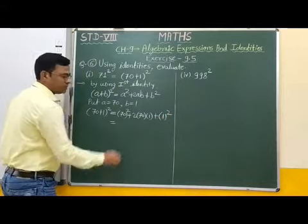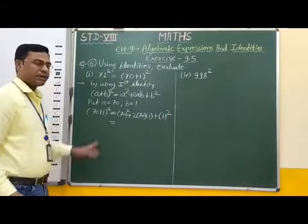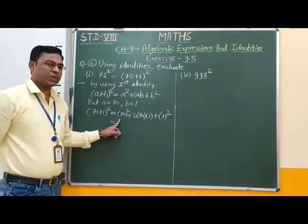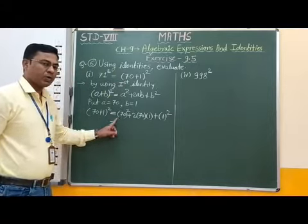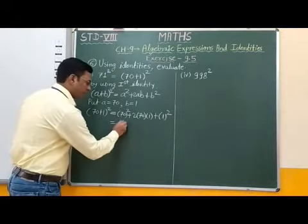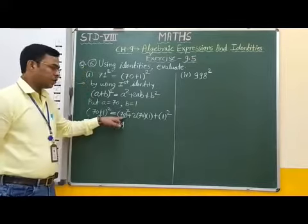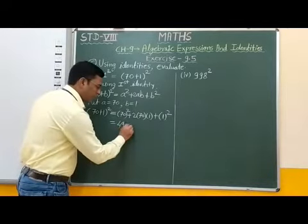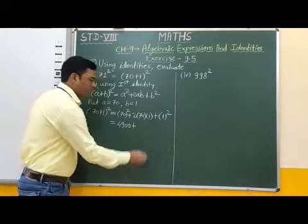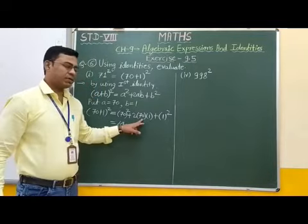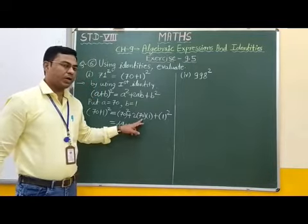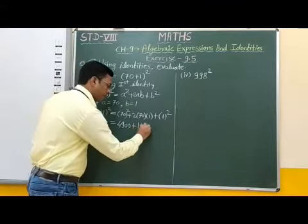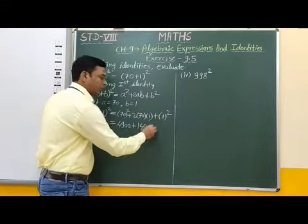Now we have to simplify this. For 70 squared, first we find 7 squared which is 49, so we write 49 with two zeros, giving 4900. Then plus 2 into 70 into 1 equals 140. And 1 squared equals 1.